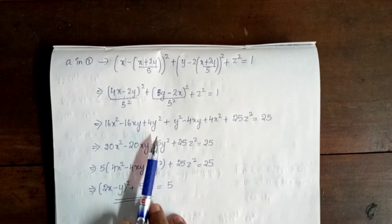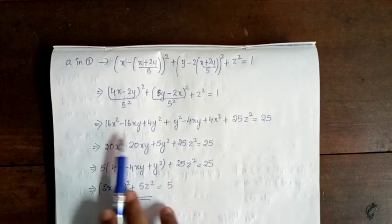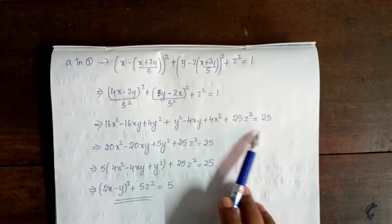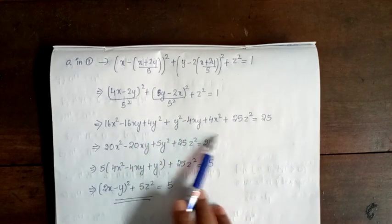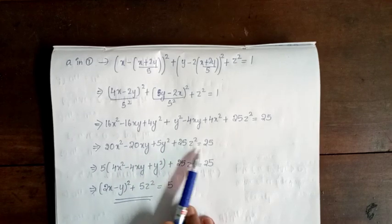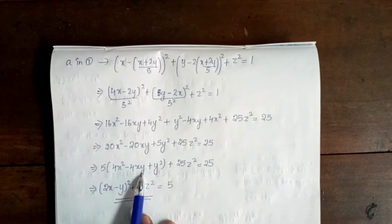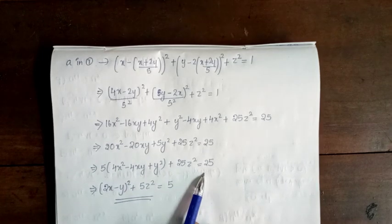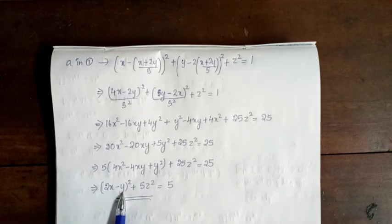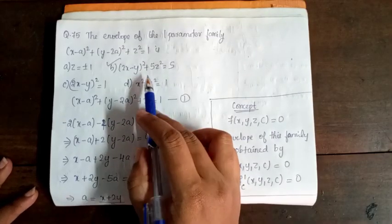Multiplying through by 25: 16x² − 16xy + 4y² + y² − 4xy + 4x² + 25z² = 25. This simplifies to 5(4x² − 4xy + y²) + 25z² = 25, which gives 4x² − 4xy + y² + 5z² = 5. So option B is correct.